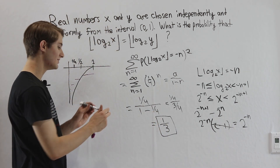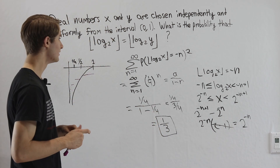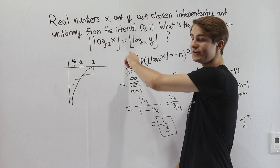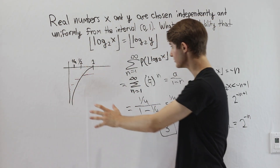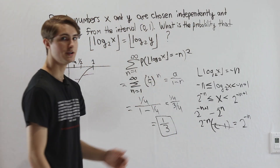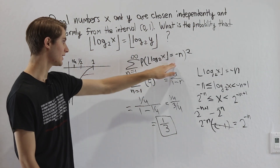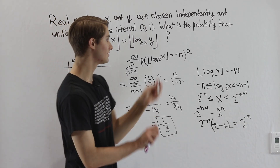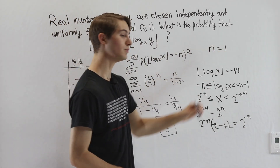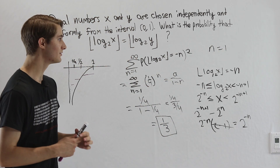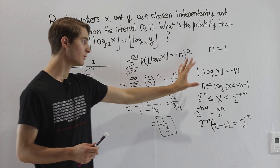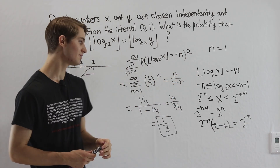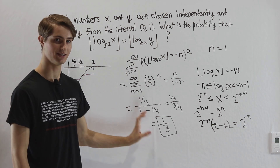So this probability is indeed one third. When doing this kind of problem solving — looking at the problem statement, graphing, and figuring out what summation we need — it often helps to look at a specific case like n equals 1. That gives us information about what process to apply for the more complicated general case, and we can arrive at our answer.